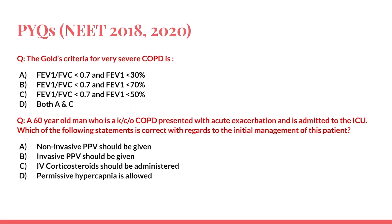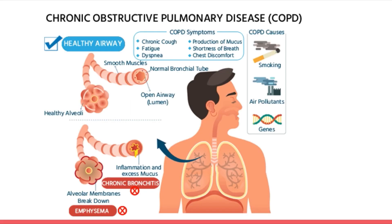We'll be highlighting the salient features of COPD — Chronic Obstructive Pulmonary Disease — which is an obstructive disease. As seen in the image, a healthy airway has normal alveoli, smooth muscles, and bronchial tube. In COPD, there are two main entities: emphysema and chronic bronchitis.